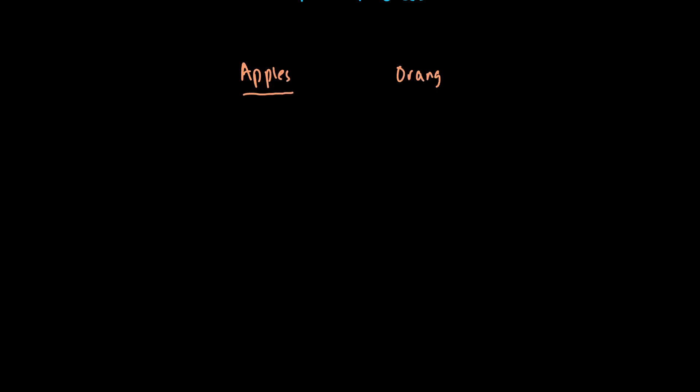Let's say we have an individual thinking about two goods: apples and oranges. He is going to find the combination of apples and oranges which results in maximum possible satisfaction from his limited income. We need to find all the different combinations of the two goods between which this individual, let's say Ali, has no preference at all. For example, if you give him a combination of 40 apples and 1 orange, and then reduce apples from 40 to 30, he will say that in order to remain indifferent — to get the same satisfaction as from 40 apples and 1 orange — you must give him 30 apples and 2 oranges, compensating the loss of 10 apples with an extra orange.